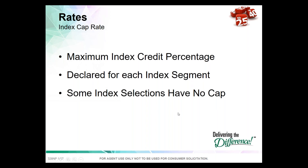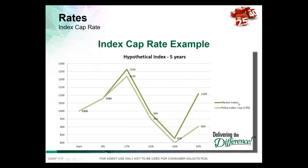Let's look at cap rates with a theoretical example. Suppose the cap is 13%. If the index goes up 8% in the first year, that's within our 13% cap, so we credit 8%. The next year the index goes up 17%, which is higher than our cap, so the actual crediting rate is capped at 13%. On the way down, it's still within the positive cap range. Then on a big rebound year of 34%, the cap limits the credit to 13%.